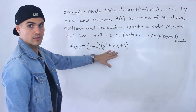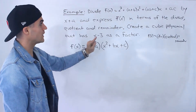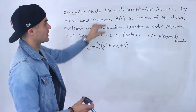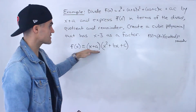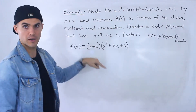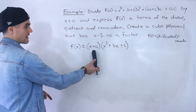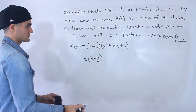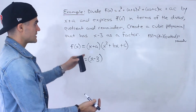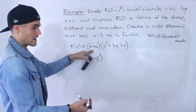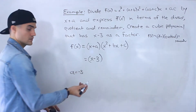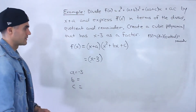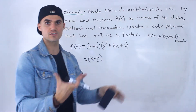So we solved the first part of the question with that division. But now we've got to create a cubic polynomial that has x minus 3 as a factor. Notice in general that this function has a factor of x plus a, because when we divided by x plus a the remainder was 0 — so by the factor theorem, x plus a is a factor. If we bring in actual numbers and say x minus 3 is a factor, then the a value is negative 3. And we can just pick any values for b and c, then plug them in to get a cubic polynomial.